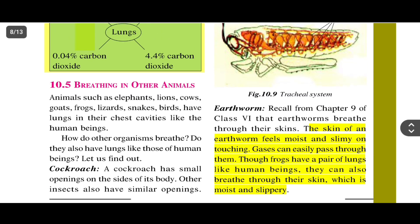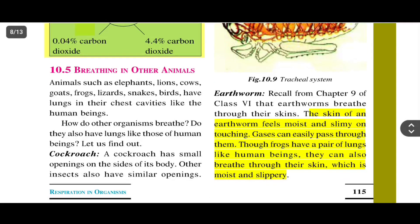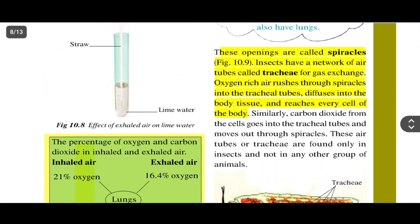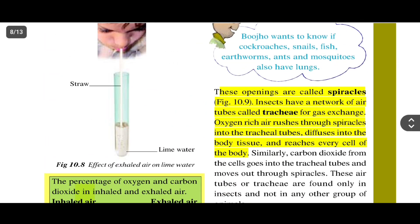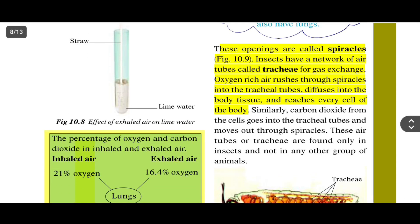A cockroach has small openings on the sides of its body. Other insects also have similar openings. These openings are called spiracles.